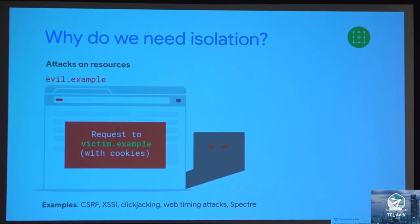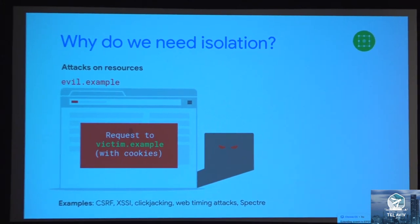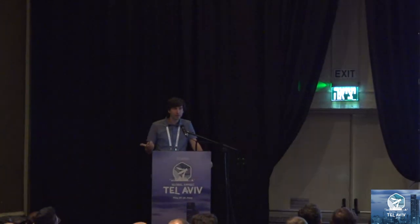The answer is that because of certain issues in how browsers isolate different origins from each other, there are vulnerabilities like cross-site request forgery, cross-site script inclusion, click-jacking, web timing attacks, and Spectre — they all fall into that category. Specifically into the subcategory of attacks on resources. Attacks on resources are usually caused by the fact that any site on the internet can load a resource from your server, and your server cannot tell apart that resource load from a resource load originating from your own site.